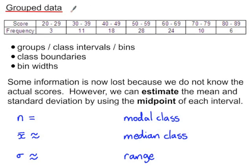This lesson is about grouped data and calculating some statistics on the data. When we don't have the original values, we only know the frequency of values within a certain range. For this set of data we know that we have three scores from 20 to 29, and 11 from 30 to 39, but we don't know the actual values of those scores. These scores are placed in groups, or class intervals, or bins.